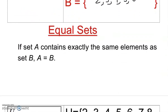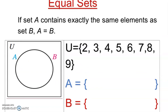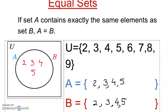Now, equal sets: set A contains exactly the same elements as set B. For example, A has two, three, four, five and B also has two, three, four, five — exactly the same. So A and B are in the same circle, representing that they are exactly equal — same elements. This is just recapping the same concept, but now represented visually using the Venn diagram circle.